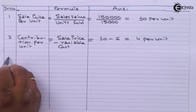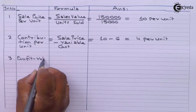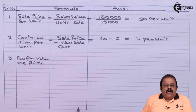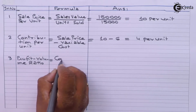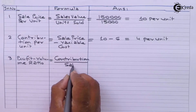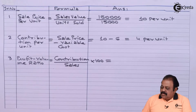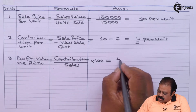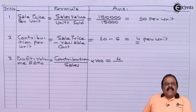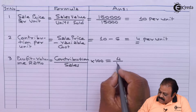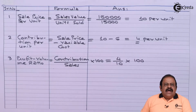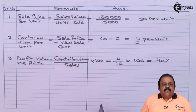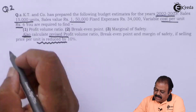Now we will find out the profit volume ratio. The formula for PV ratio is contribution divided by sales, multiplied by 100. Contribution per unit is ₹4 and selling price per unit is ₹10, so it is 4 divided by 10 multiplied by 100. We get a PV ratio of 40%.